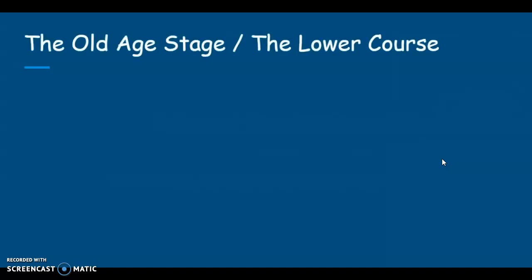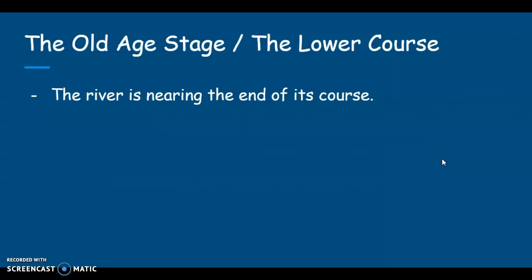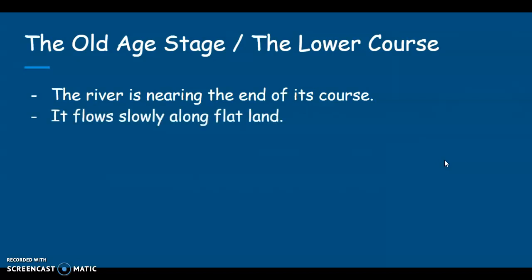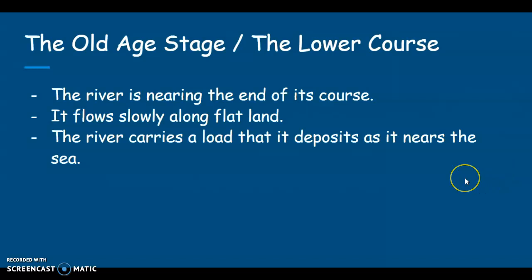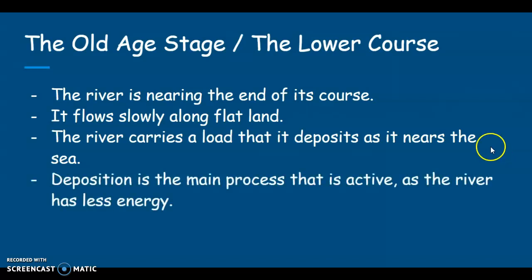What would you expect to see? Because the river is coming towards the end, it is much bigger than what it was previously. It has had all of the tributaries flow into it, and it flows very slowly along flat or almost flat land. The river is carrying a large load that it deposits near the sea, so there's a lot of sediment in the river. Deposition is the main process that is active at this stage, because the river has a lot less energy and is not able to carry the load.